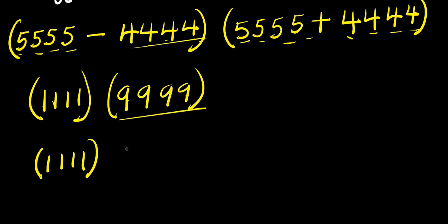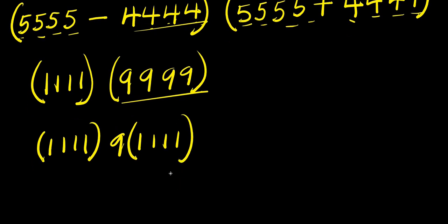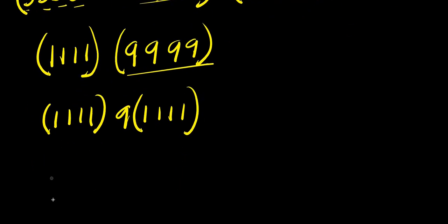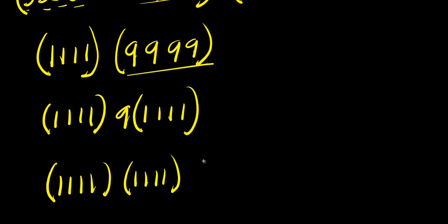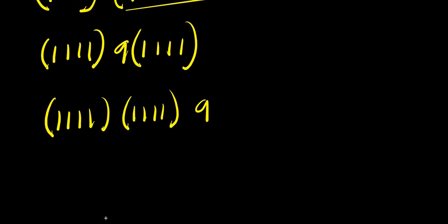So from here I can have 1111 times 9999. I can factor nine. Then nine divided by nine I have one, nine divided by nine I have one, nine divided by nine I have one, nine divided by nine I have one. So this simply means we have 1111 times 1111 times nine.